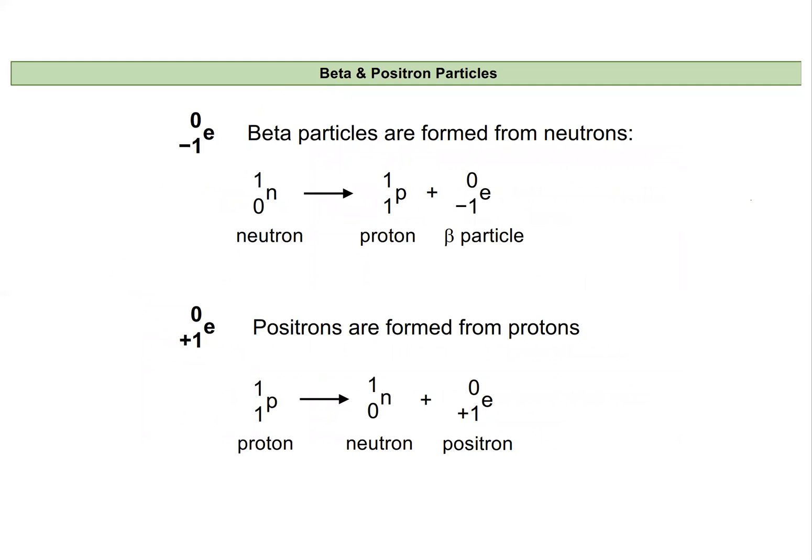Let's look at beta and positron particles a little bit more. I think that alpha particles are a little bit more intuitive. It's removing two of the protons and two of the neutrons that are already within the nucleus.